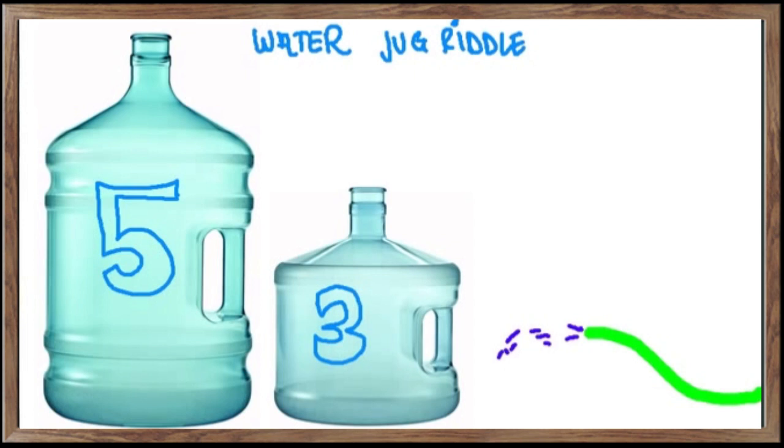One premise of the riddle is that the four gallons can go into a separate bucket, and we'll say that there's a bucket over here, and your goal is to fill this bucket with four gallons. The trick is, of course, that it has to be exactly four, and it can't be even slightly off.